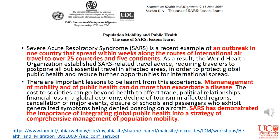Having looked at disease dispersion and the role of geography, we now look at the role of transport in disease dispersion. Research has shown that transport and dispersion of this type of disease is not a new issue — some research from the SARS epidemic in the early 2000s highlighted the importance of international air travel. We've seen that in New Zealand where the vast majority of early cases were linked to air travel. The CDC noted that mismanagement of mobility and public health can exacerbate a disease, and that SARS demonstrated the importance of integrating global public health into a strategy of comprehensive management of population mobility.